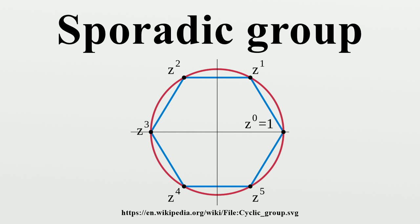A simple group is a group G that does not have any normal subgroups except for the trivial group and G itself. The classification theorem states that the list of finite simple groups consists of 18 countably infinite families, plus 26 exceptions that do not follow such a systematic pattern. These are the sporadic groups.